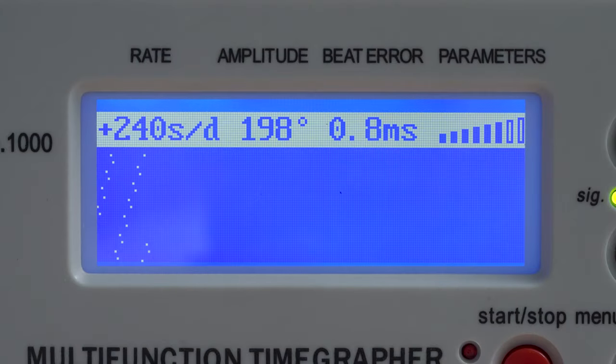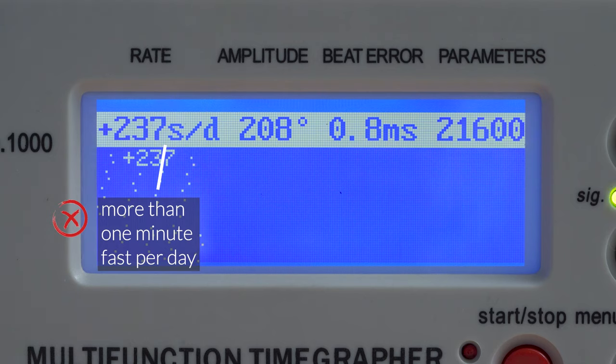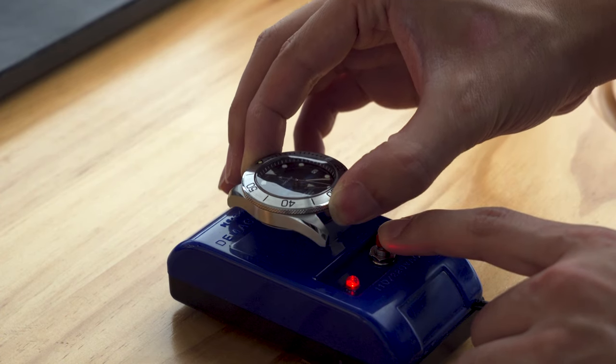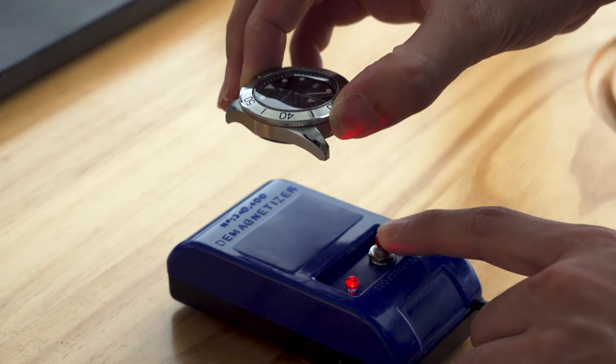On a side note, you might come across a watch with a reading like this. Extremely high rate, and low amplitude. This is a sign of magnetism, and it should be fixed before you carry on with regulation. We have a separate guide on this.